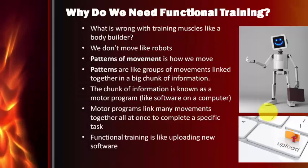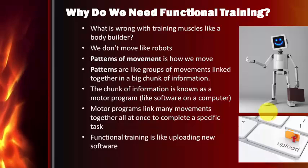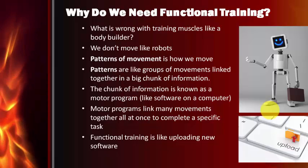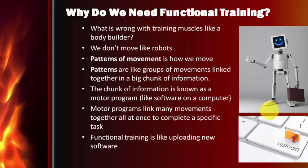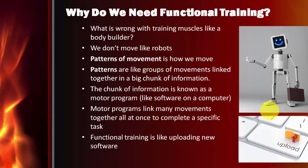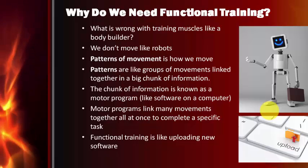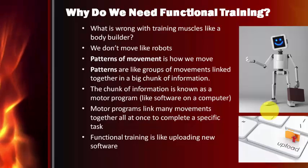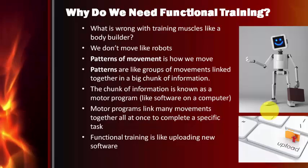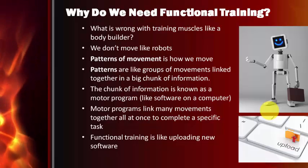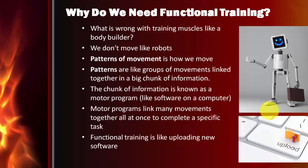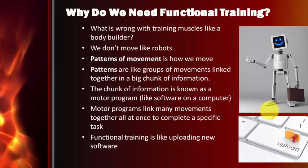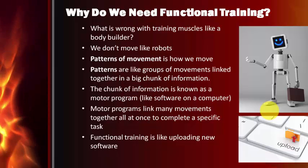So why do we need functional training? What's wrong with just training muscles like a bodybuilder — chest, back, quads, hamstrings? Basically, we don't move like robots. We move with patterns of movement. Patterns are a series of movements all linked together in a big chunk of information. A squat, for example, is really a pattern because it links into many other things and coordinates arms with it. This chunk of information is known as a motor program — a bit like software on your computer. Motor programs link many movements together all at once to complete a task. When you use functional training methods, you're basically upgrading your software and making it more efficient.